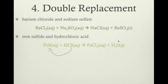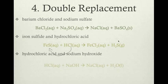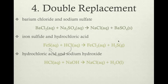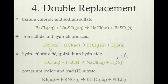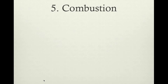More double replacement examples: iron sulfide and hydrochloric acid react — chlorine and sulfur switch places — producing iron chloride and hydrosulfuric acid. Hydrochloric acid and sodium hydroxide react — hydrogen switches places with sodium — producing sodium chloride and water. Potassium iodide and lead(II) nitrate react — potassium switches places with lead — producing potassium nitrate and lead iodide.